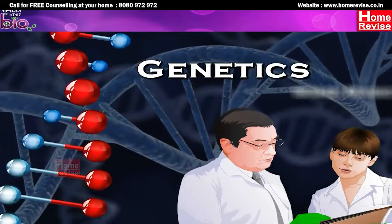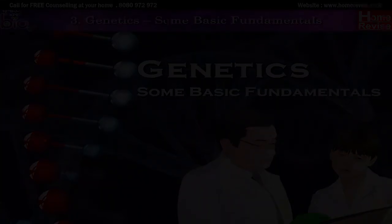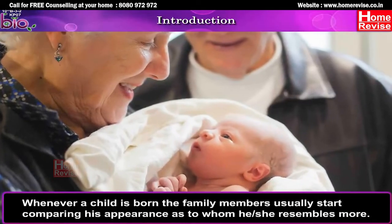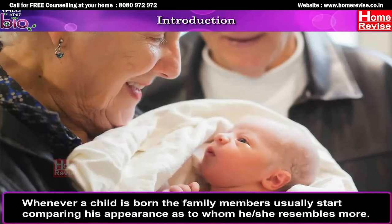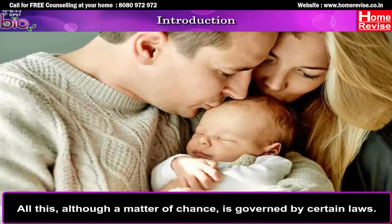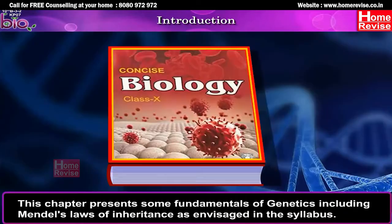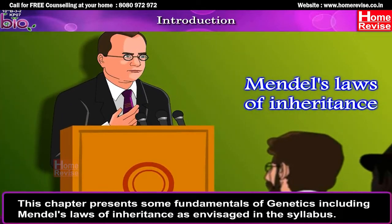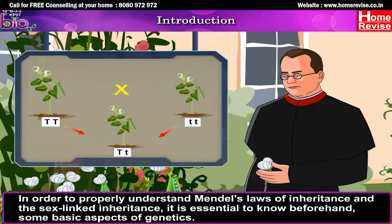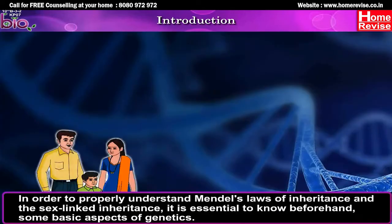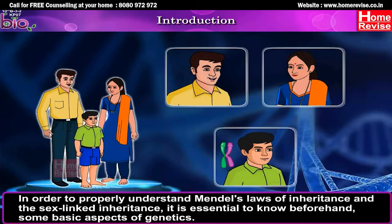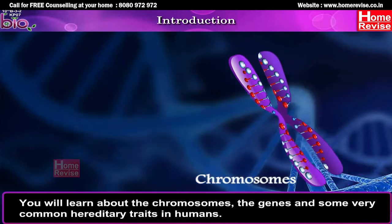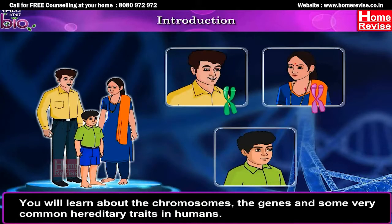Chapter 3: Genetics — Some Basic Fundamentals. Whenever a child is born, family members usually start comparing his or her appearance to see whom they resemble more. Although a matter of chance, this is governed by certain laws. This chapter presents some fundamentals of genetics including Mendel's law of inheritance. To properly understand Mendel's law of inheritance and sex-linked inheritance, it is essential to know some basic aspects of genetics, including chromosomes, genes, and common hereditary traits in humans.